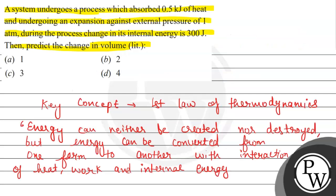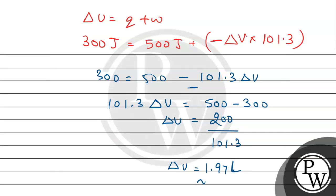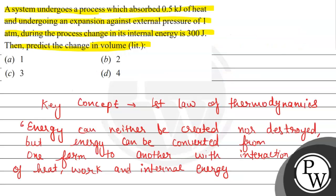So, according to the given options, integer values are given as 1, 2, 3 and 4. And this will be equivalent to 2 litres. By this we can say change in volume will be 2 litres. And the answer of this question will be option B, 2. So, change in volume is 2 litres. Hope you understood it well. Best of luck.